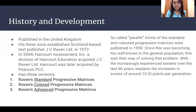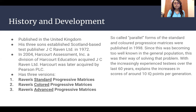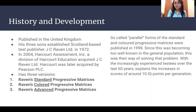It was published in the United Kingdom, and the three sons of John C. Raven established the Scotland-based test publisher J.C. Raven LTD in 1972. Then in 2004, Harcourt Assessments Inc., which is a division of Harcourt Education, acquired J.C. Raven LTD. Harcourt was later acquired by Pearson PLC. You can find this test on the Pearson website if you want to buy it.